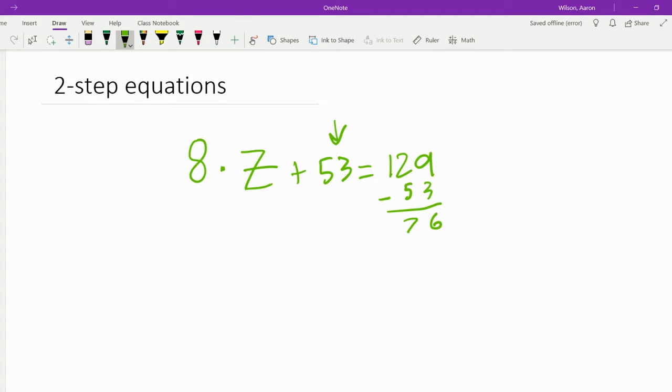Now since we subtracted 53 from the right side, we have to subtract 53 from the left side. So we need to subtract 53 from 53, but that just gets you to 0, so that's nothing. So we're just going to cross it out, and now we're going to bring 8 times z down.